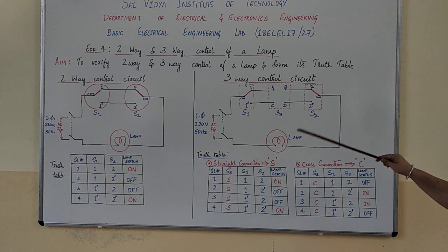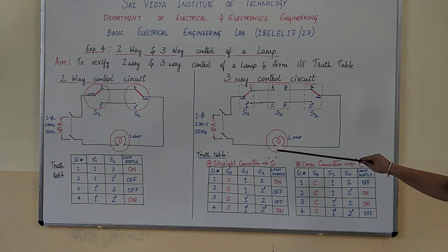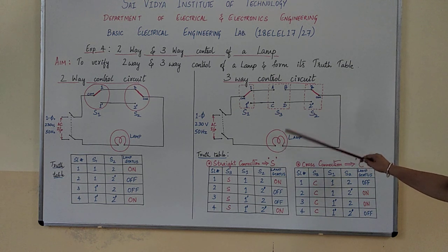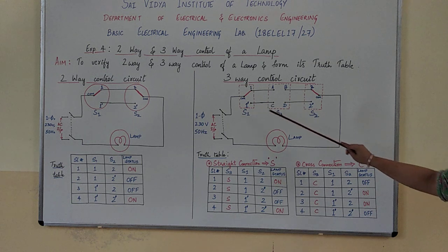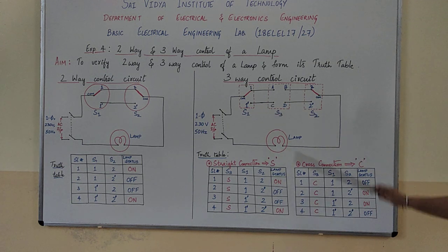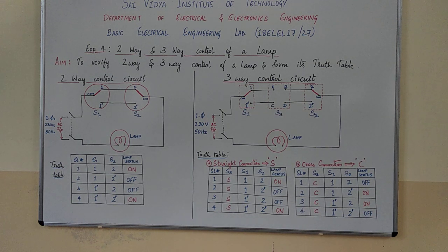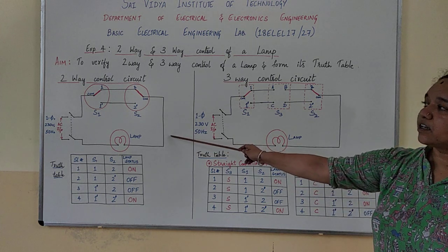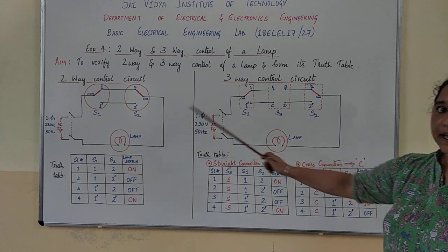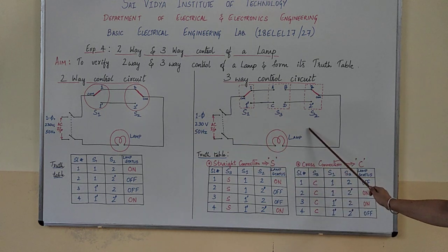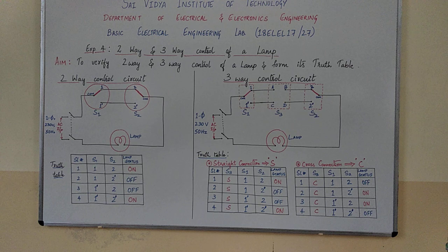We learned how to control a single lamp using three switches at three different places. This completes experiment 4: the two-way control circuit of a lamp and the three-way control circuit of a lamp. Hope you learned it. Thank you for watching.